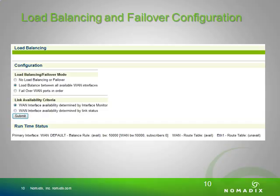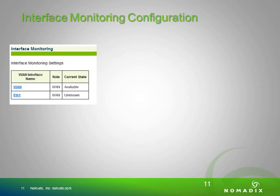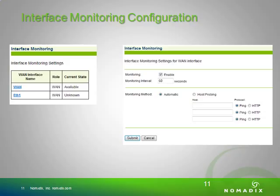For load balancing and failover configuration, if you have the load balancing and failover module, you will be able to set either load balancing between all WAN interfaces or failover of the WAN interfaces in order. You will also need to determine the link availability criteria — whether you utilize the interface monitor or the hardware link status. To configure interface monitoring, each WAN has its own configuration. You select how it monitors: the automatic method is a periodic DNS query to the DNS server set in that WAN, or the host probing setting probes with a ping or an HTTP request to the configured host.